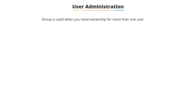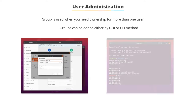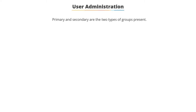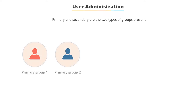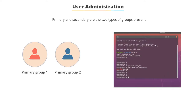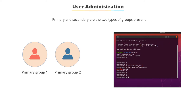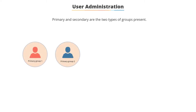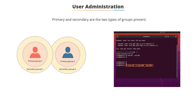When ownership is required for more than one person, groups are used instead of users. Like user addition, groups can be added either by the GUI or CLI method. There are two types of groups: primary group and secondary group. When a user is created by default, they are grouped under the primary group, and the name of this primary group follows the name of the user. The command 'groupadd groupname' is used to add a group. If a user wants to join an already present group, then the user is grouped under the secondary group. The command 'useradd -g groupname username' is used to add a user to a secondary group.